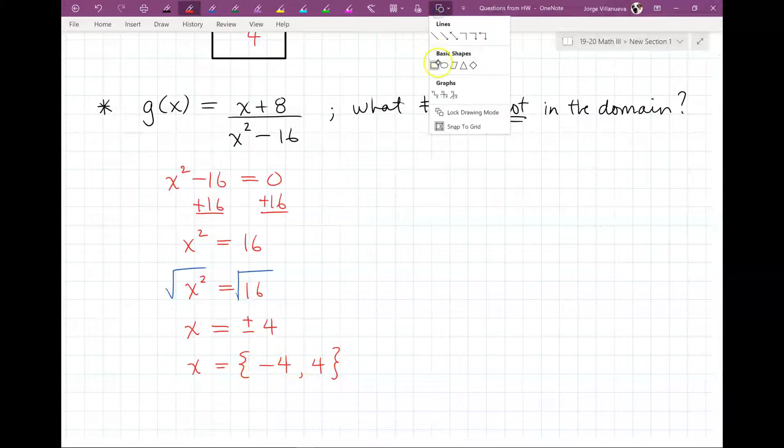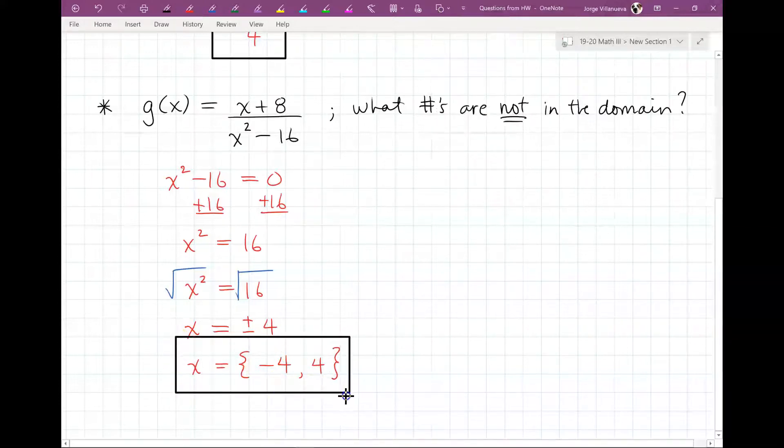And if I remember correctly, in that question it asks that if it has multiple answers, write your answers using a comma. So there you go. Just write -4 comma 4, or maybe they have it set up so it looks like this.